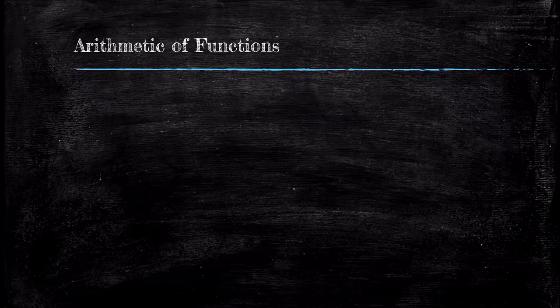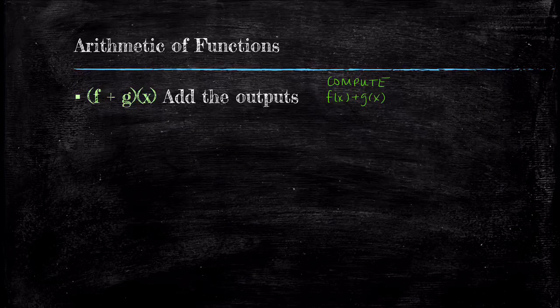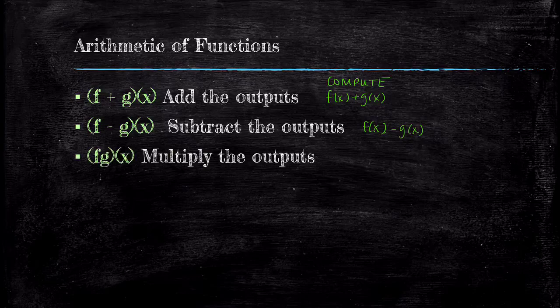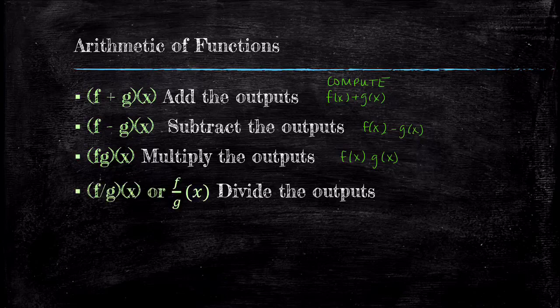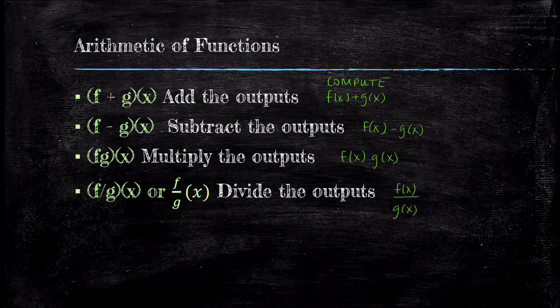Let's cover the notation that describes arithmetic of functions. If we add, subtract, multiply, and divide f and g, we get another function. They are f + g of x, f - g of x, f times g of x, and f over g of x. For f + g of x, we compute f(x) + g(x). For f - g of x, we compute f(x) - g(x). For f times g of x, we compute f(x) times g(x). For f over g of x, we compute f(x) divided by g(x). Side note, in order for f over g to work, g(x) cannot equal zero. Done with the notation. Let's work on some examples.